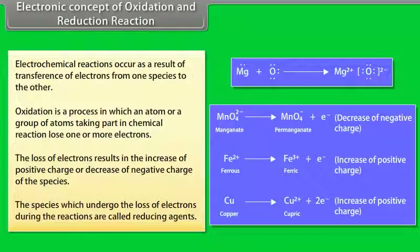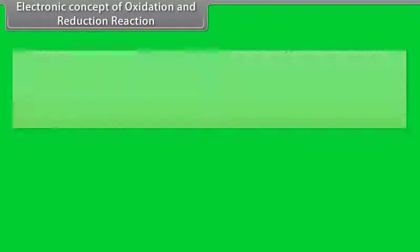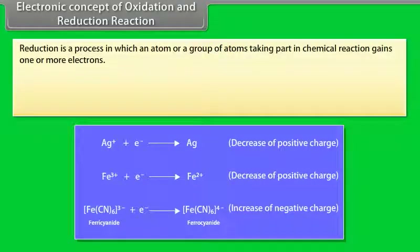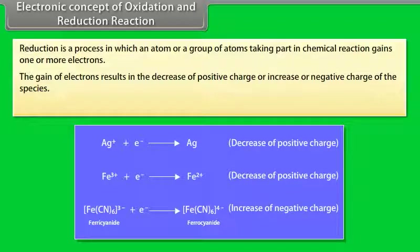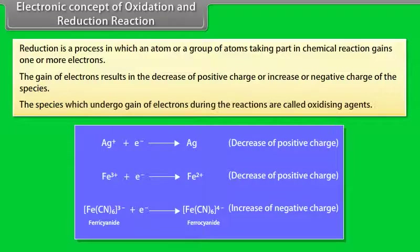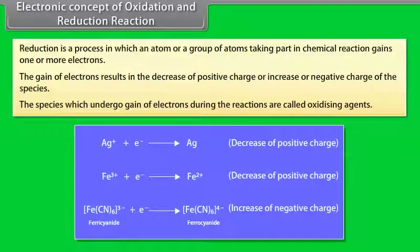The species which undergo the loss of electrons during reactions are called reducing agents. MnO₄⁻, Fe²⁺, and CO₂ are reducing agents in these examples. Reduction is a process in which an atom or group of atoms gains one or more electrons. The gain of electrons results in the decrease of positive charge or increase of negative charge of the species. The species which undergo gain of electrons during reactions are called oxidizing agents. Ag⁺, Fe³⁺, and [Fe(CN)₆]³⁻ are oxidizing agents in these examples.